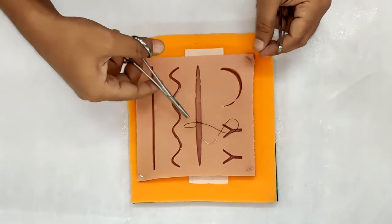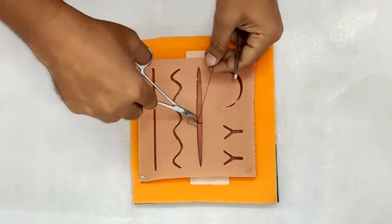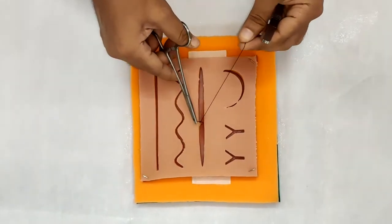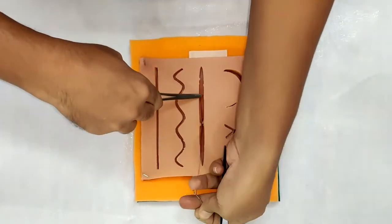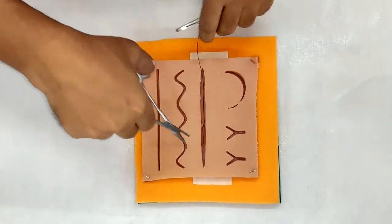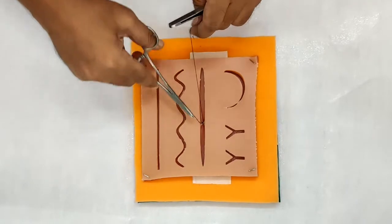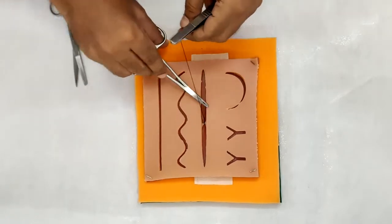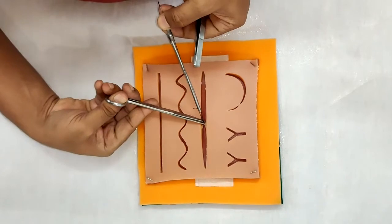So this is your suture, and now we will be tying it. Once I am tying it, you can see the knot is getting buried inside. And now we will cut and cut it as close to the wound as possible.